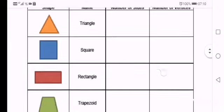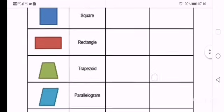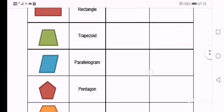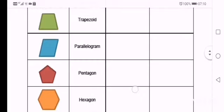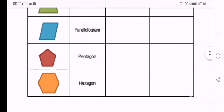Okay, so then you're going to do the same with square, rectangle, trapezoid, parallelogram, pentagon, and hexagon. Count the sides and count the corners.